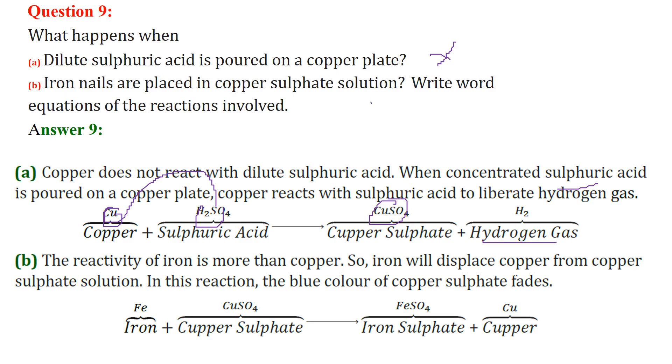Iron nails are placed in copper sulfate solution, write word equation of the reactions involved. So the reactivity of iron is more than copper. So iron is going to displace copper from copper sulfate solution. Iron is going to replace Cu from CuSO4. So this will be FeSO4, iron sulfate. This reaction, the blue color of the copper sulfate will fade.